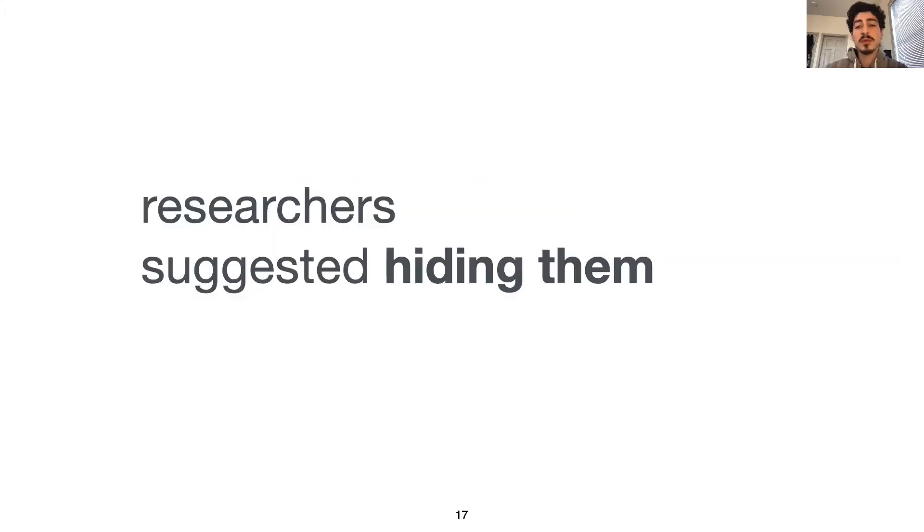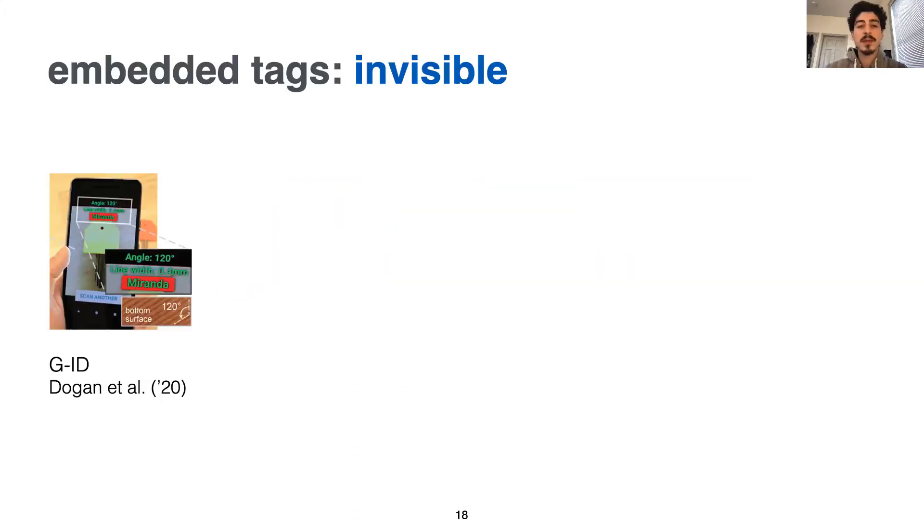Researchers then came up with new techniques to hide the tags. One piece of work I showed at CHI 2020 is G-ID, which uses the unobtrusive surface artifacts that appear due to the 3D printing process to identify the object. However, these tags are only used for identification and do not store any data.